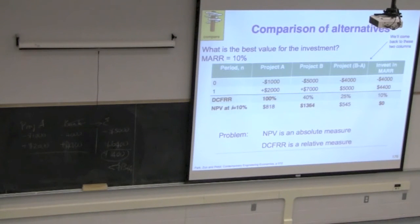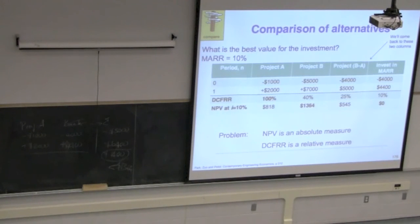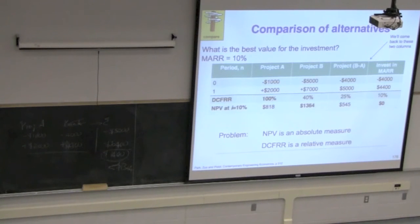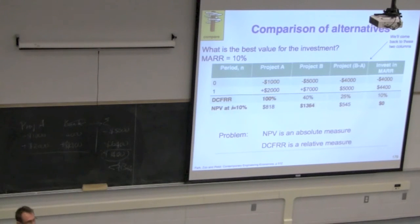Looking back to independent projects: with independent projects you had the option of doing nothing with the other money. With mutually exclusive alternatives you have to purchase one of A, B, C, or D. You're making a decision between investing that money or going with the upgrade. If the upgrade is going to get you a greater return than MARR, go with the upgrade. If Project B's return is going to be less than MARR, you wouldn't go to the more expensive project.